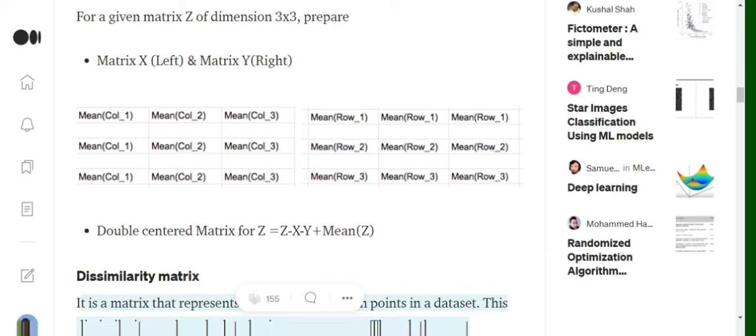Matrix X consists of the mean of the column of that specific column in each cell, and matrix Y consists of the mean of every row in that particular cell. Now double centering follows this particular formula, where Z is our actual matrix, X is the column mean matrix, and Y is the row mean matrix.